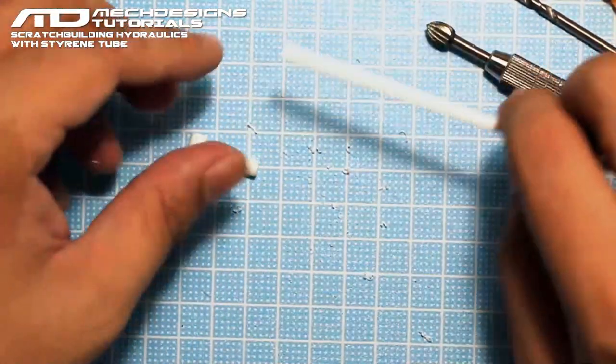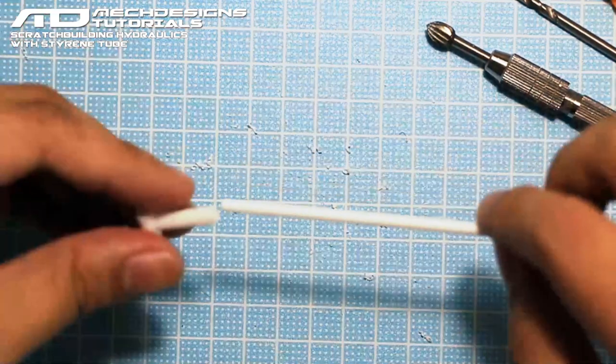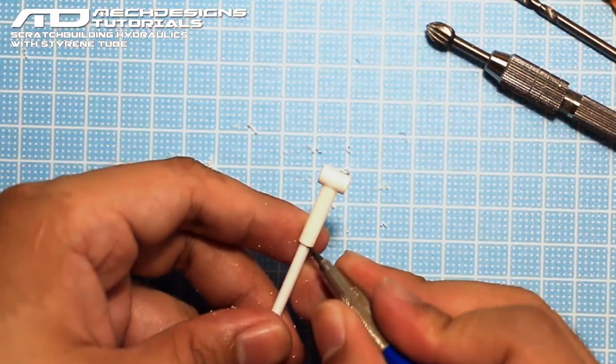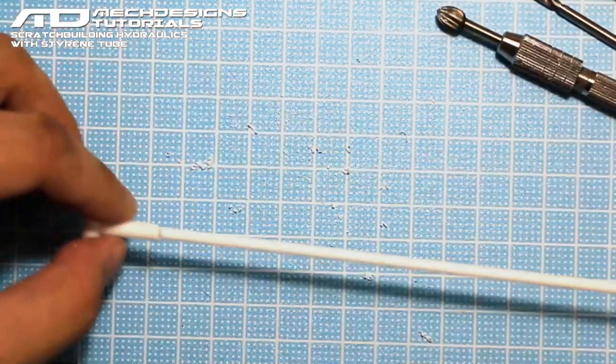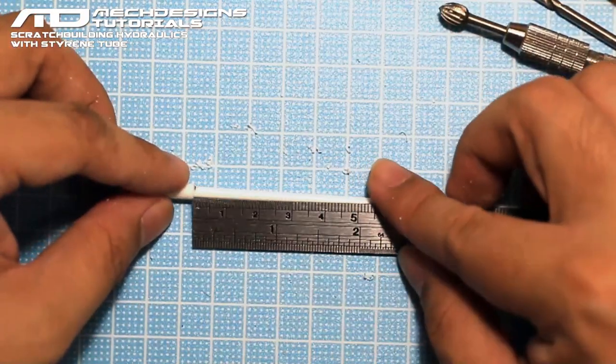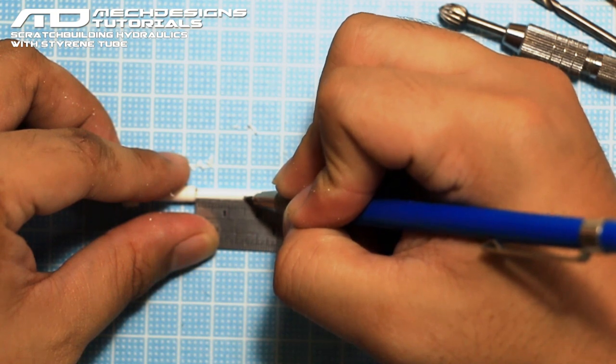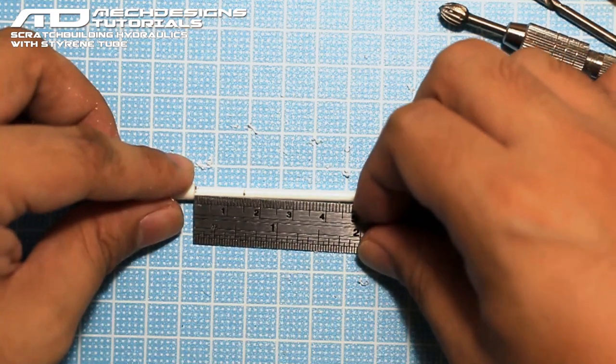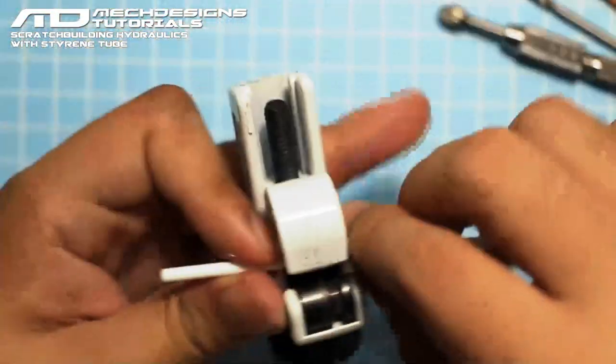Now we're going to get the thinnest item, which is the item number 224, and we're just going to mark it first on how long the other part is. So just mark it there. Then you can decide how long you want it, but for this, let's make it around 1.5cm. So that is 1cm and 5mm or 1.5cm. Then we're going to use again our pipe cutter.